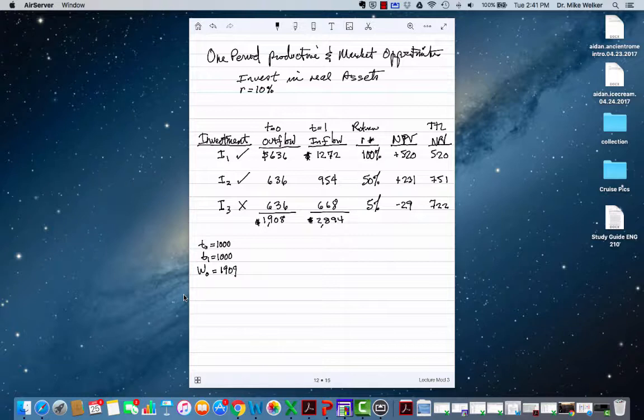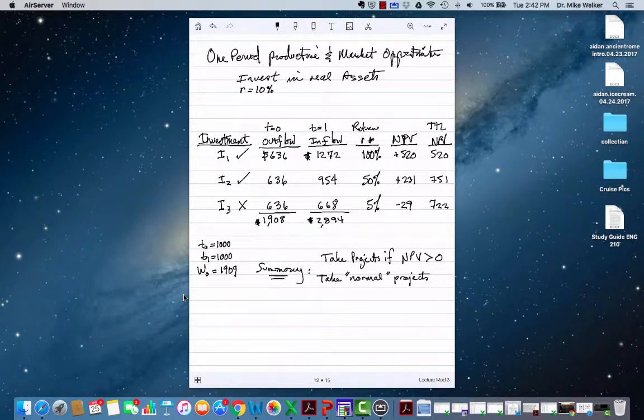Take on i1 and i2 because they increase wealth. The summary is take projects if their net present value is positive—that's the NPV rule. You could also take normal projects if the internal rate of return r star exceeds the market rate of return r—that's the rate of return rule. The basic idea is that a project is a better opportunity than the market.